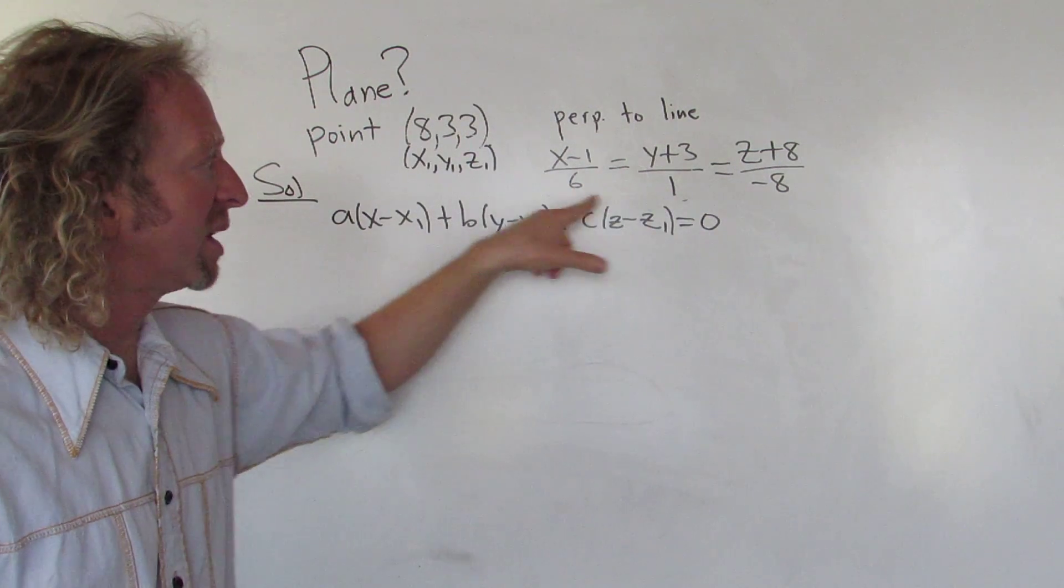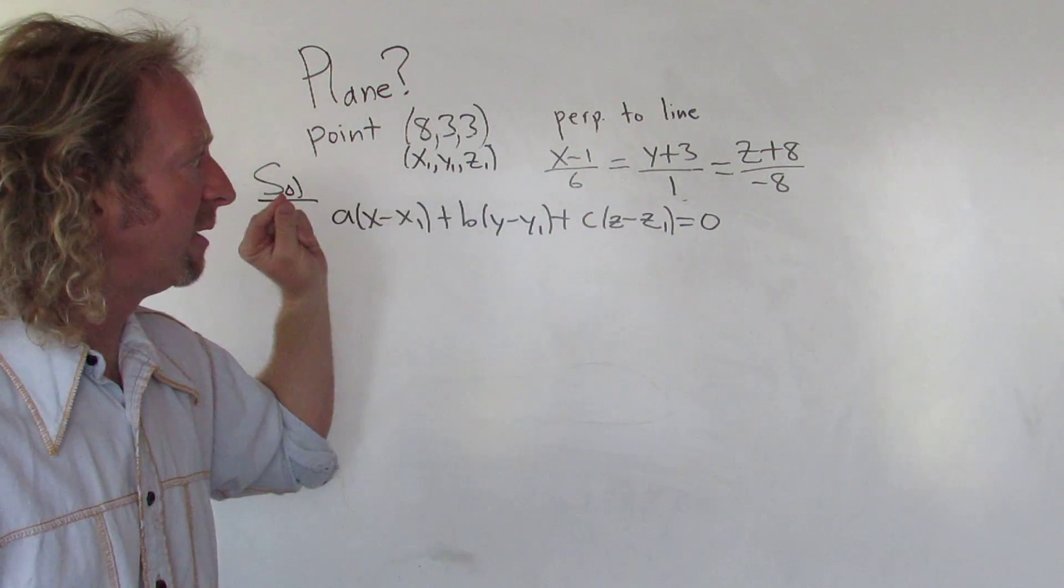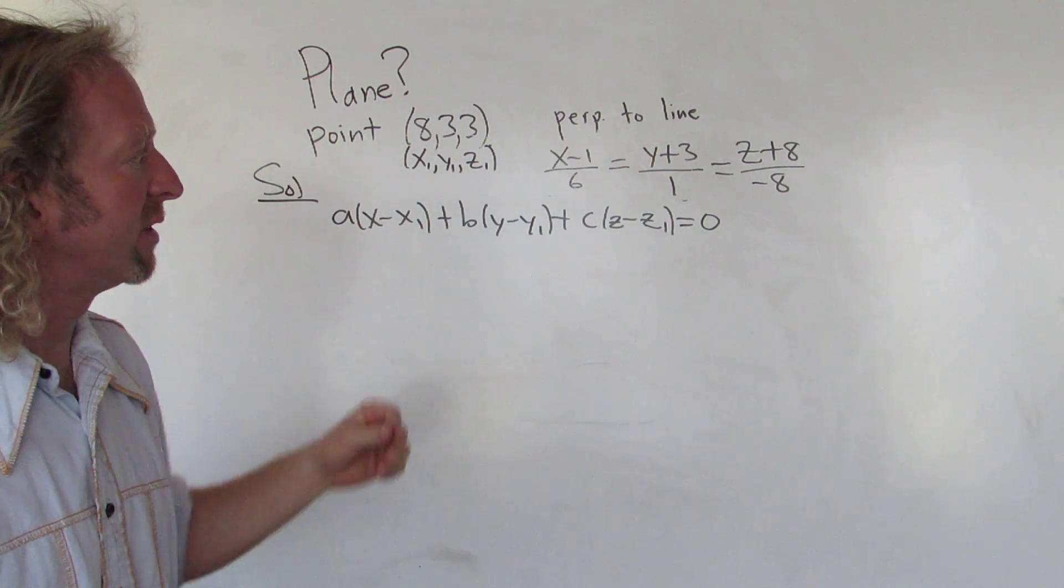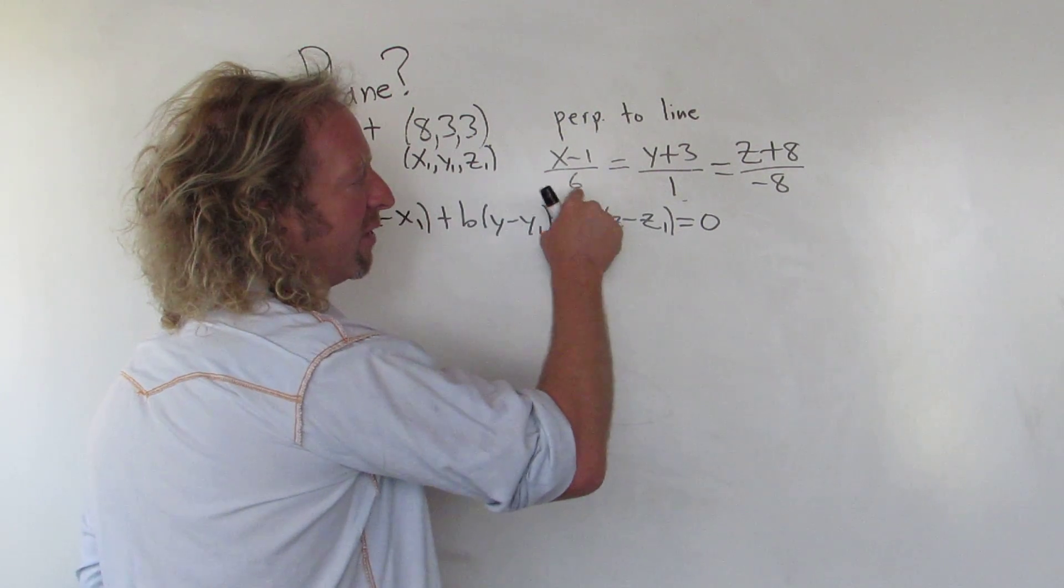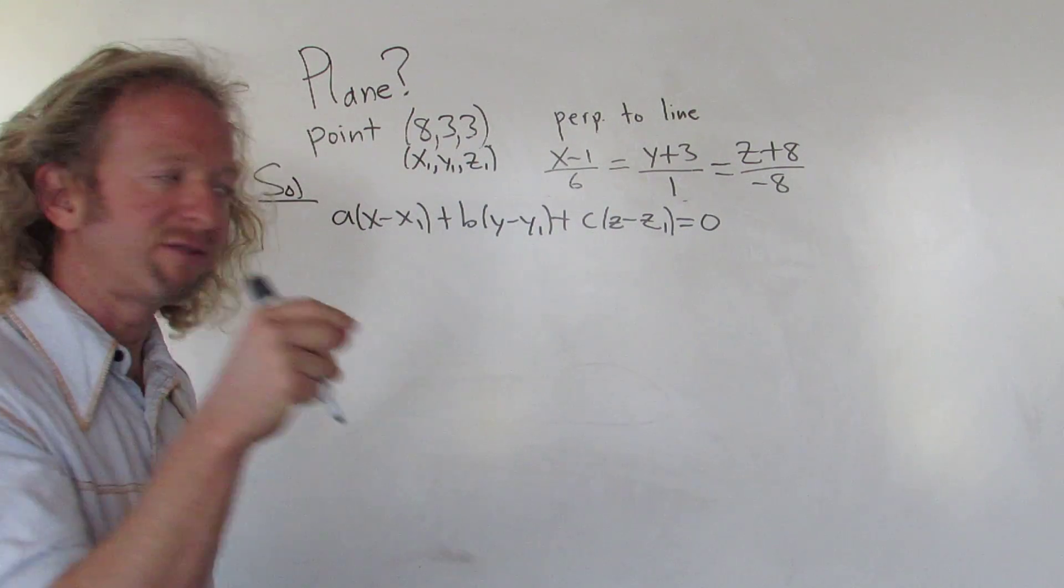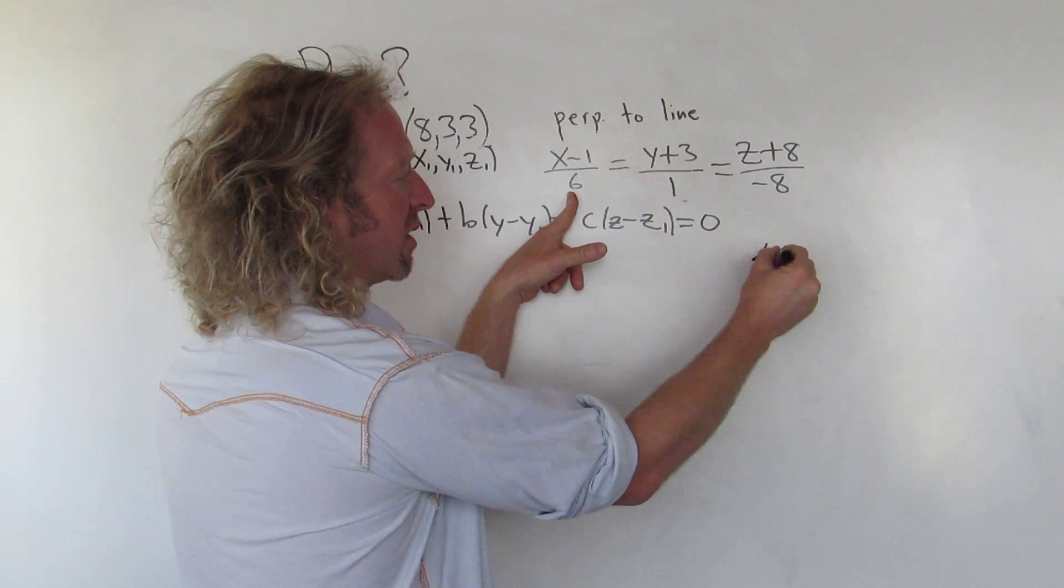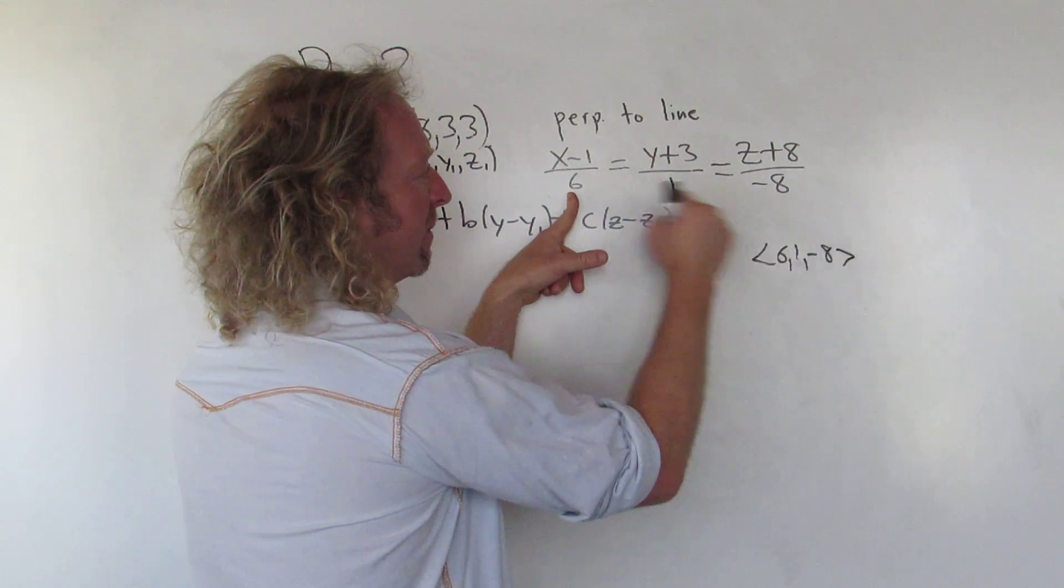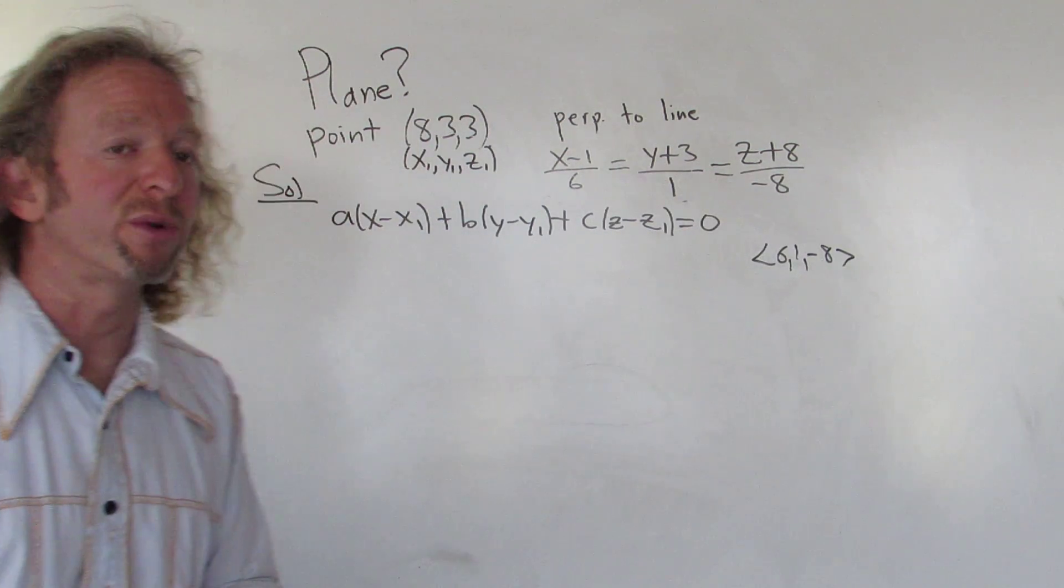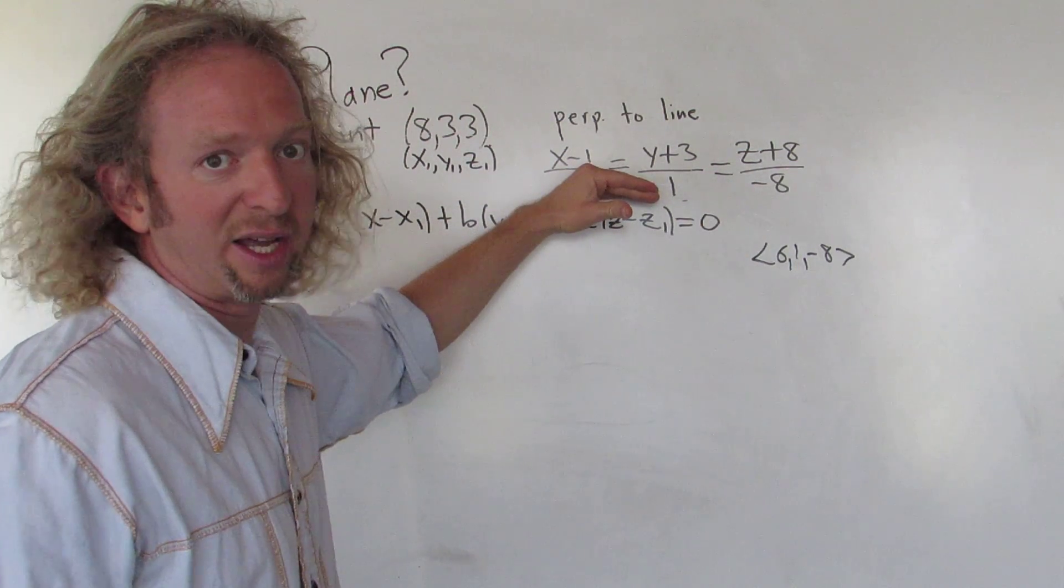These are the symmetric equations of a line. If you remember from previous math, the vector that is parallel to this line is called the direction vector and its components are 6, 1, negative 8. They come from here. Those are called direction numbers. So this vector is parallel to this line.